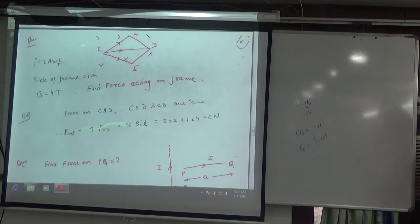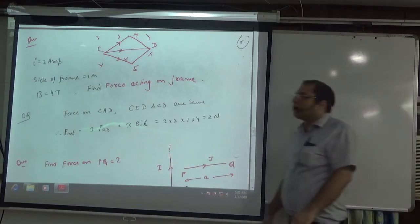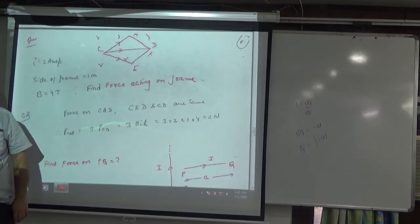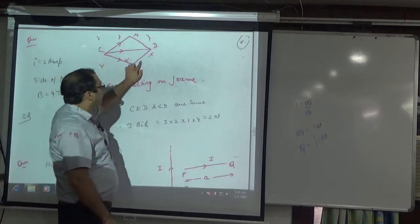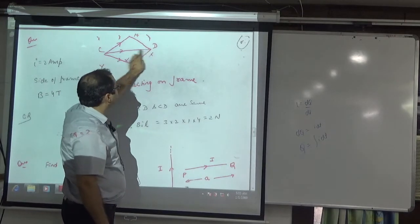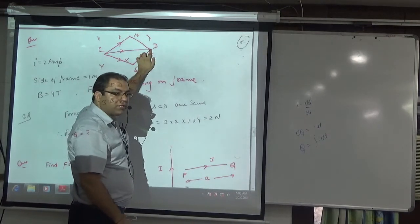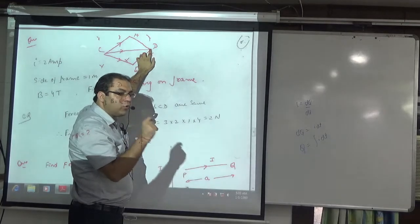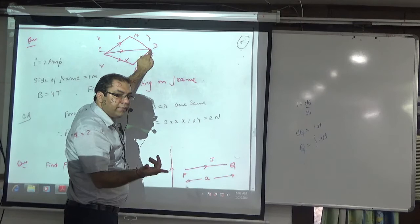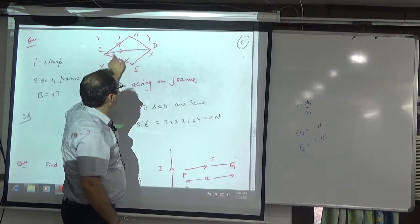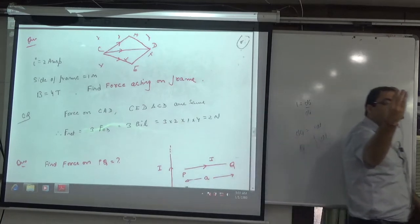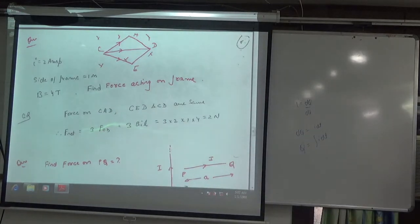This problem has three wires with equal resistance and the same current. Net force is the same. When I take the force on each wire, I take the displacement — the effective displacement is CD. The force on one wire is BI·CD. This wire is also BI·CD. The displacement of the third wire is also CD. So the total force is three times BI·CD as the answer.